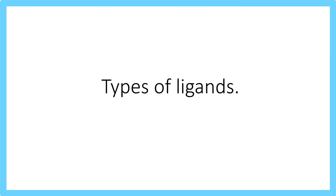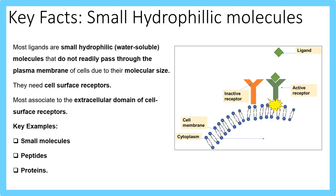Let's now look at types of ligands. The first type is small hydrophilic molecules. Hydrophilic means water-soluble — water-loving — however, they cannot pass through the plasma membrane due to their molecular size. They need cell surface receptors and most associate with the extracellular domain where the ligand binding domain is found. Key examples of small hydrophilic molecules are small molecules, peptides and proteins.